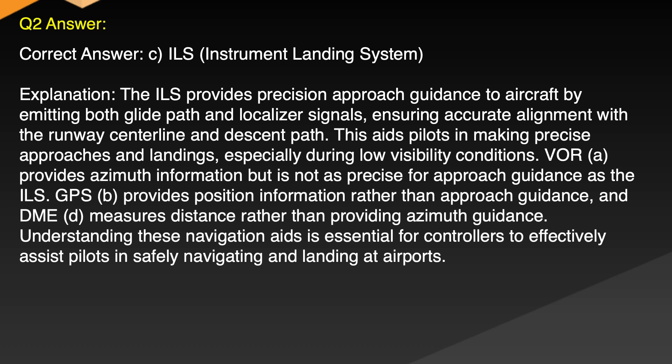Explanation: The ILS provides precision approach guidance to aircraft by emitting both glide path and localizer signals, ensuring accurate alignment with the runway centerline and descent path. This aids pilots in making precise approaches and landings, especially during low visibility conditions. VOR provides azimuth information but is not as precise for approach guidance as the ILS. GPS provides position information rather than approach guidance, and DME measures distance rather than providing azimuth guidance. Understanding these navigation aids is essential for controllers to effectively assist pilots in safely navigating and landing at airports.